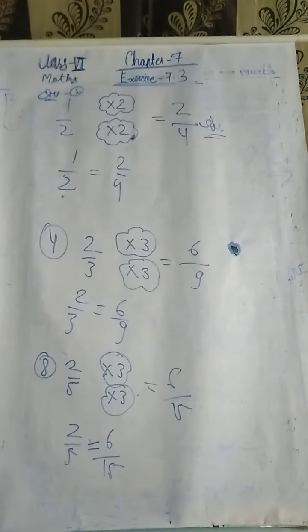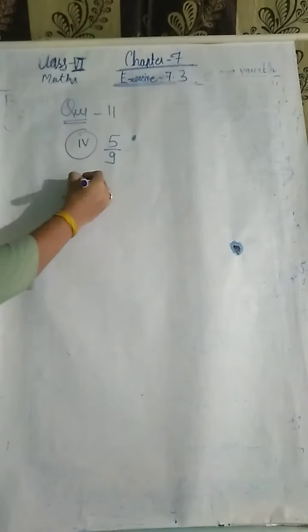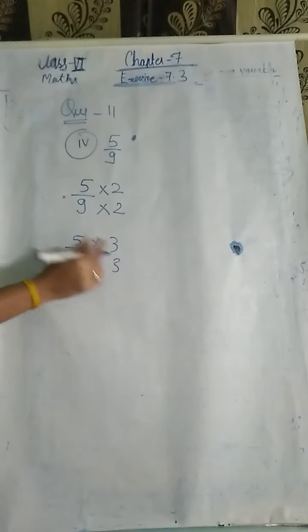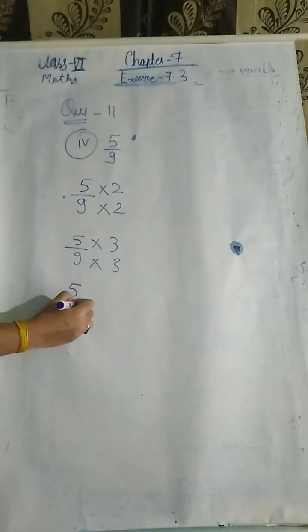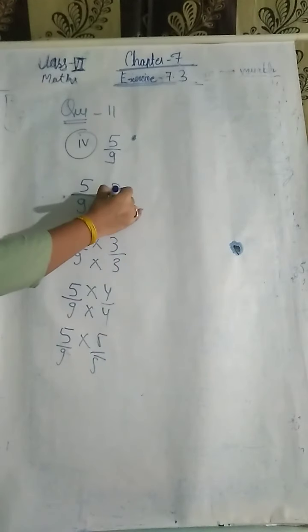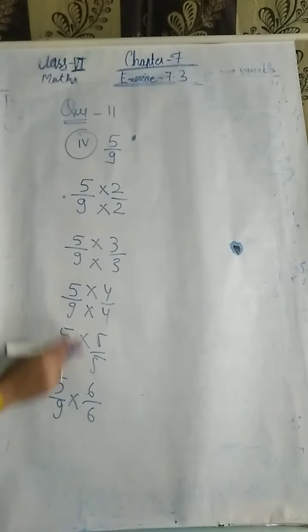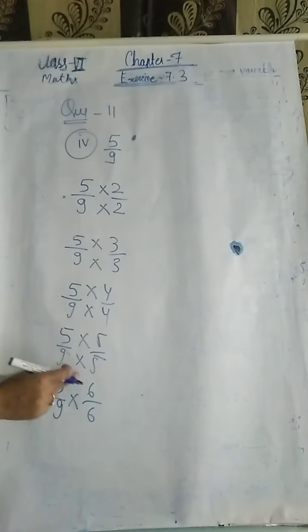Question number 11: this question may be a bit tough. For equivalent fractions of 5 upon 9, start from 2 and go up to 6. Multiply numerator and denominator both by 2, then by 3, then by 4. So 5 upon 9 multiplied by 2 gives 10 upon 18; multiplied by 3 gives 15 upon 27; multiplied by 4 gives 20 upon 36.